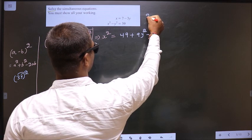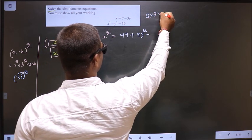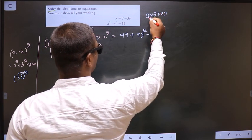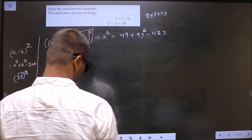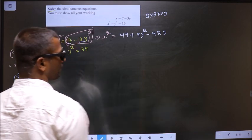Minus 2ab. 2 into 7 into 3y. 2 into 7 is 14. 14 into 3y. Clear?